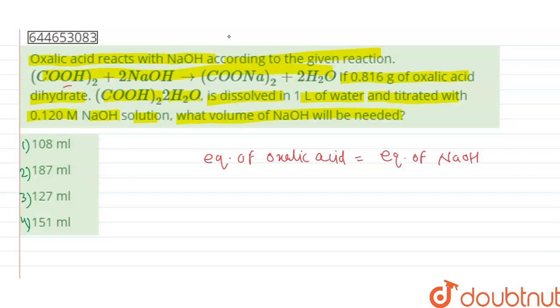Now, equivalents are given as N-factor (that is, valency factor) times molarity times volume. This is for oxalic acid and will be equal to equivalents of NaOH: N-factor times molarity times volume of NaOH.